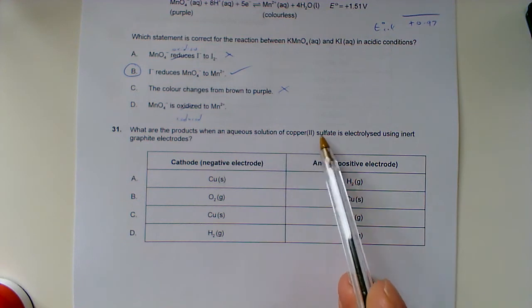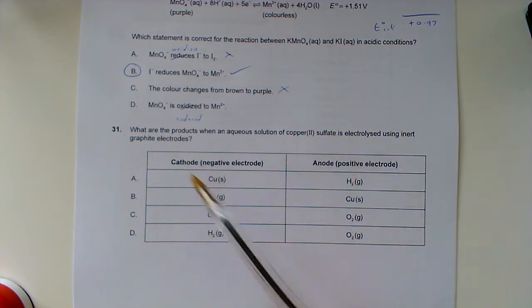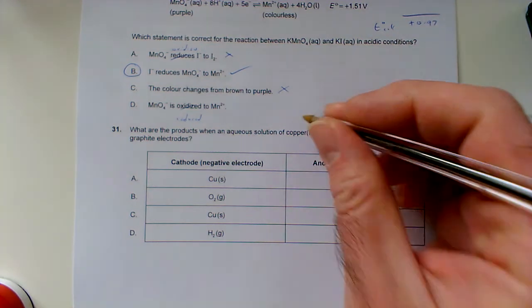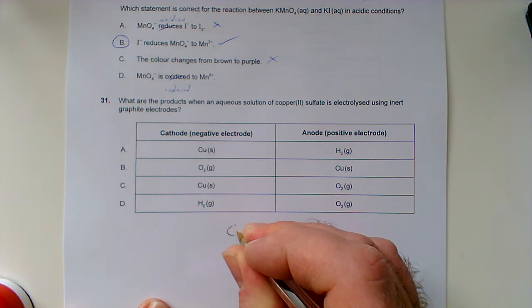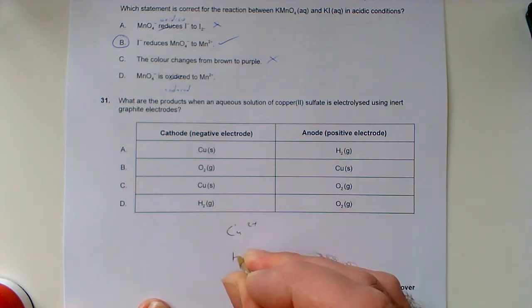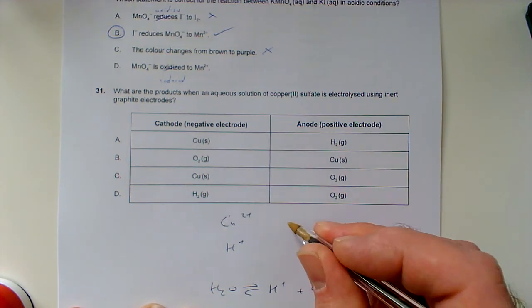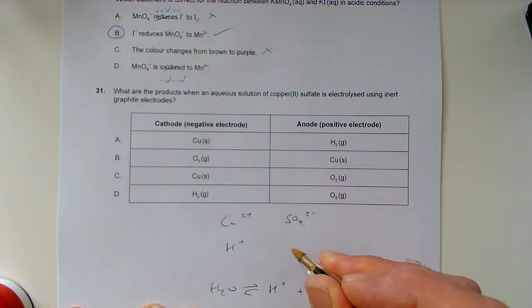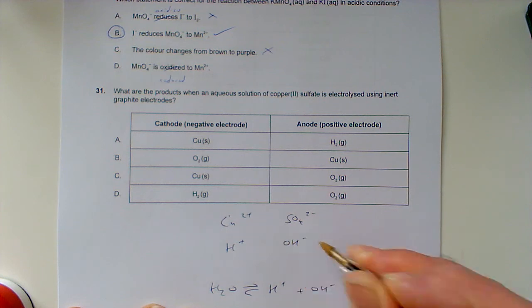What are the products when an aqueous solution of copper(II) sulfate is electrolyzed using inert graphite electrodes? In aqueous solution, we've got copper 2+ and H+, because water can dissociate into H+ and OH- ions, and then we've got the sulfate ions and OH- ions.